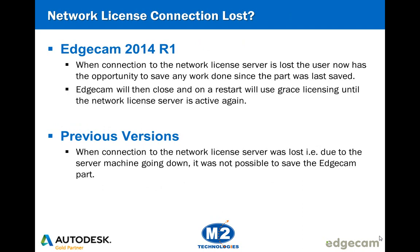Another improvement to the network license is what happens if the connection to the server is lost. In previous versions, Edgecam users working on a part would lose access to save the file they're working on when the network license access was lost. This version of Edgecam changes that — you'll have an opportunity to save the work on your part. After that point, Edgecam will close and when you restart it, Grace licensing will allow you to continue your Edgecam work without a connection to the license server until that license server is active again. There's nothing special you need to do to trigger this.